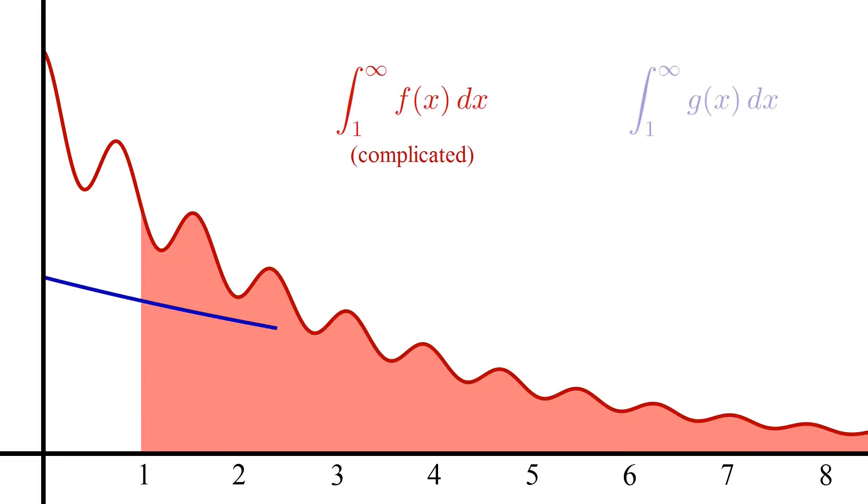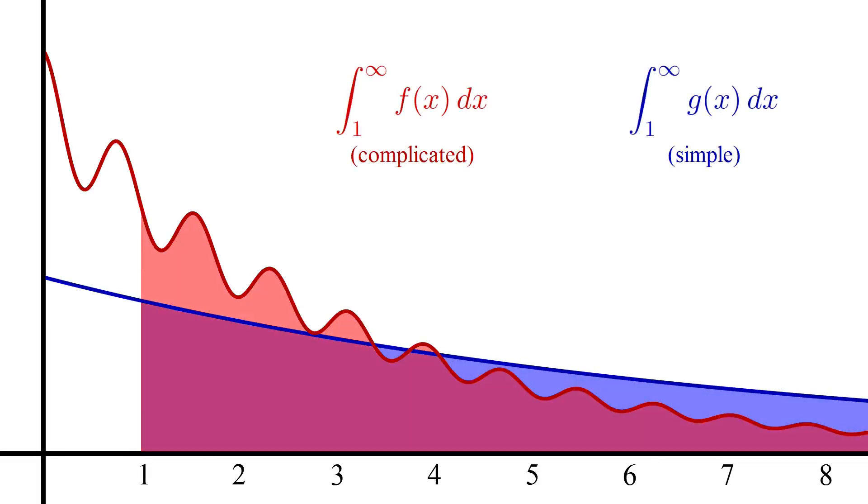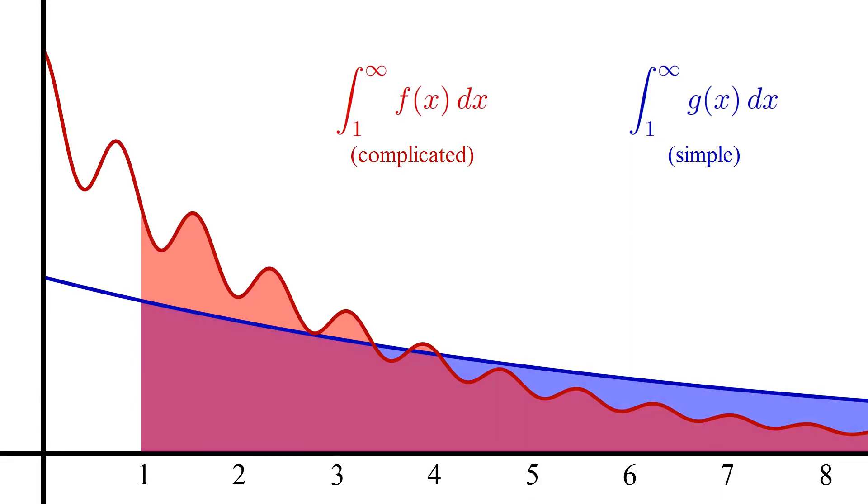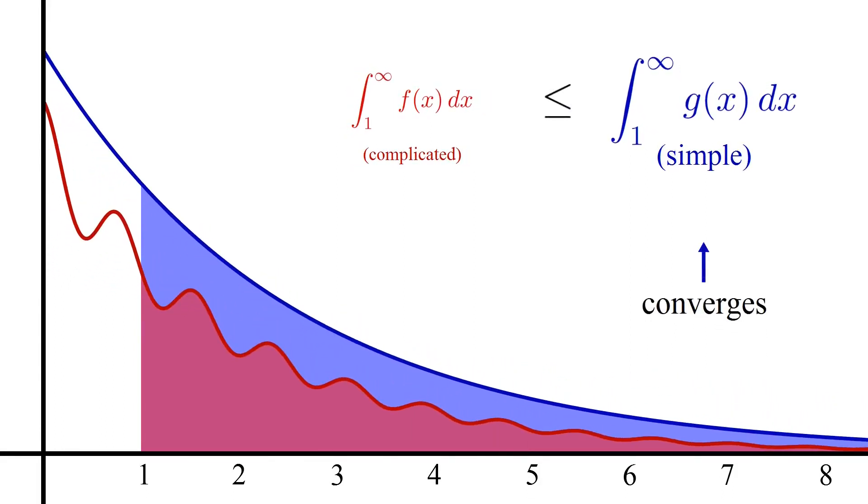As a reminder, the basic idea behind the integral comparison test was we compare a complicated improper integral to a simpler one whose convergent status we knew in advance. If the simpler integral was convergent and bigger than the complicated integral, we could then conclude the complicated integral was also convergent.